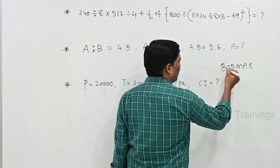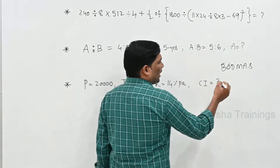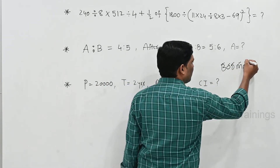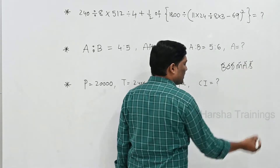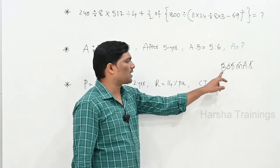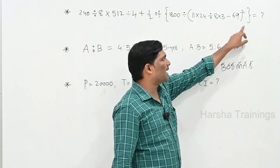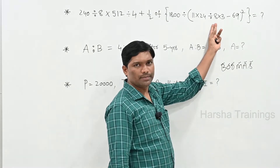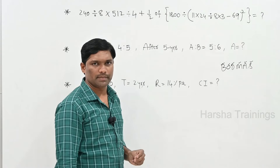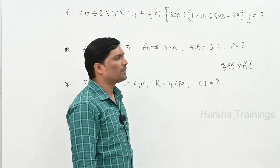BODMAS rules: B for Brackets, O for 'of' — meaning multiplication, D for Division, M for Multiplication, A for Addition, S for Subtraction. The preference order gives first priority to Brackets. So we give first preference to inner brackets.